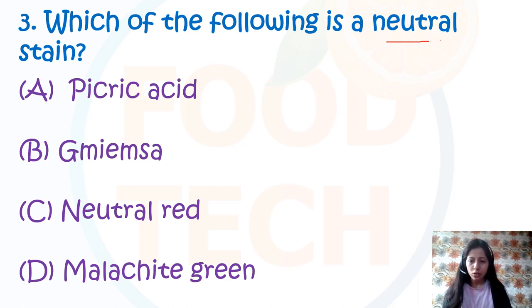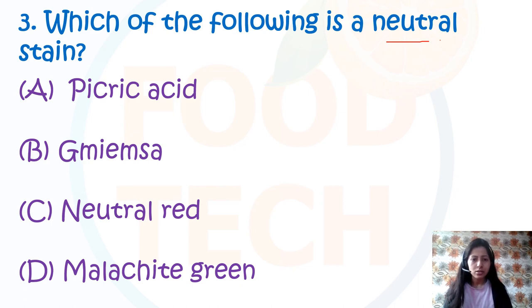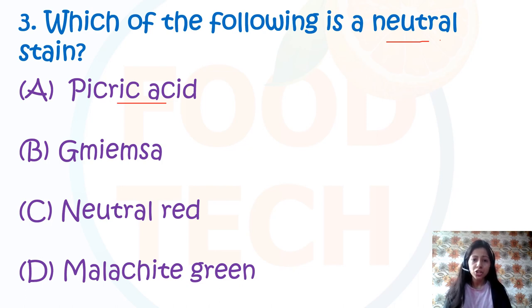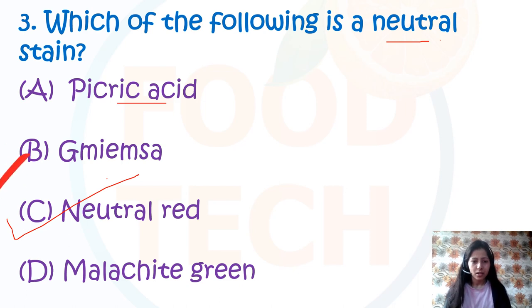Picric acid is a yellow crystalline solid which is used as a fixative. Giemsa is a differential stain which is used to differentiate between different types of microorganisms. Malachite green is a basic stain used to stain spores or vegetative cells of bacteria. So the neutral stain is neutral red, that is option number C.